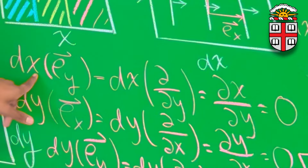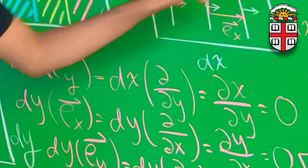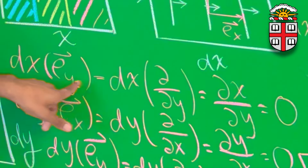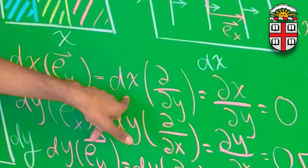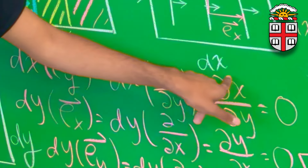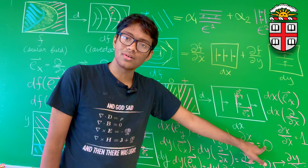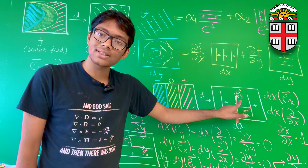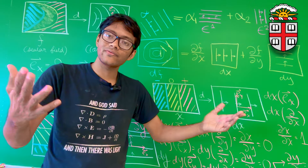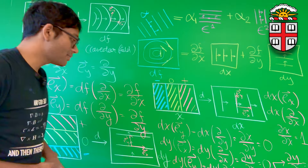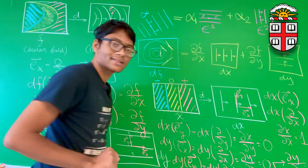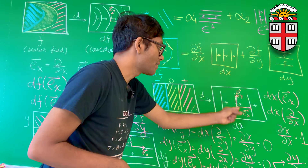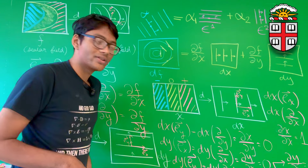How many field lines does e_y pierce on this graph? Zero. If I apply dx, my co-vector field associated with x, to e_y, I get dx(∂/∂y), which is simply ∂x/∂y = 0. That is the number of contour lines e_y pierces. Isn't that intuitive? Same idea for e_x: how many field lines does e_x pierce on the dx co-vector field?